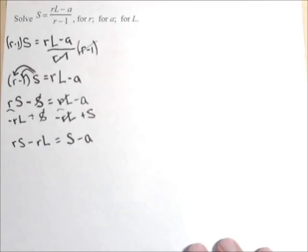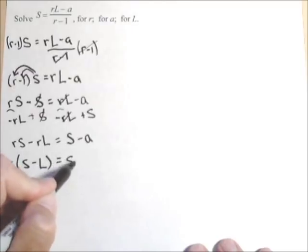Now the reason we had to do that is because we're still trying to solve for R and we still have two of them. But because they're on the same side and R is in each term, we can factor an R out. So we get R times S minus L. And this might be easier to see going the other direction. To go from here to here, we would distribute the R and that's where we get RS minus RL, equals S minus A.